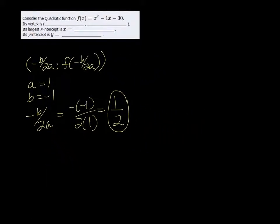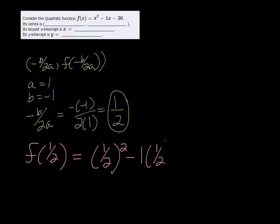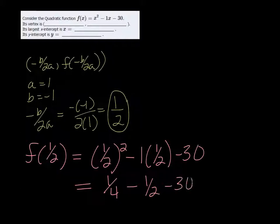In order to get the y value, we just have to plug that in to the function. So we want to find f of 1 half. So it's going to be 1 half squared minus 1 times 1 half minus 30. That's equal to 1 fourth minus 1 half minus 30. And if we plug all that in our calculators, so negative 1 divided by 4 minus 1 divided by 2 minus 30, and I change it to a fraction, I get negative 123 over 4.